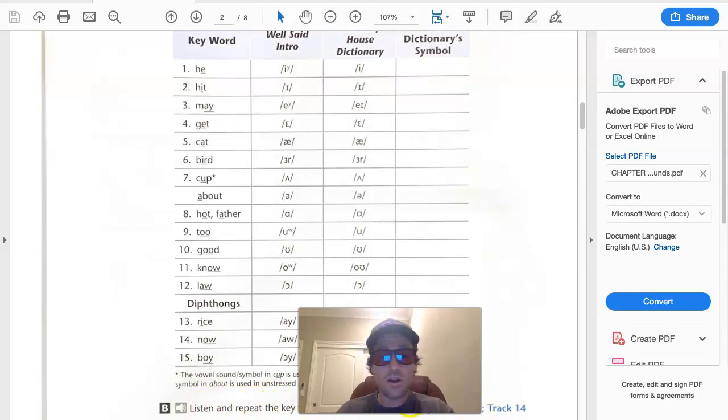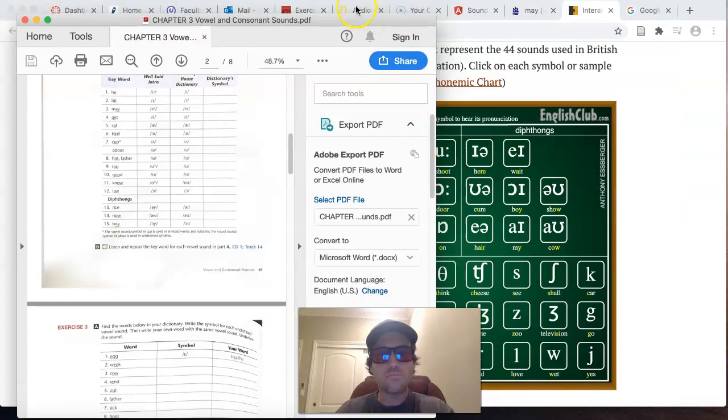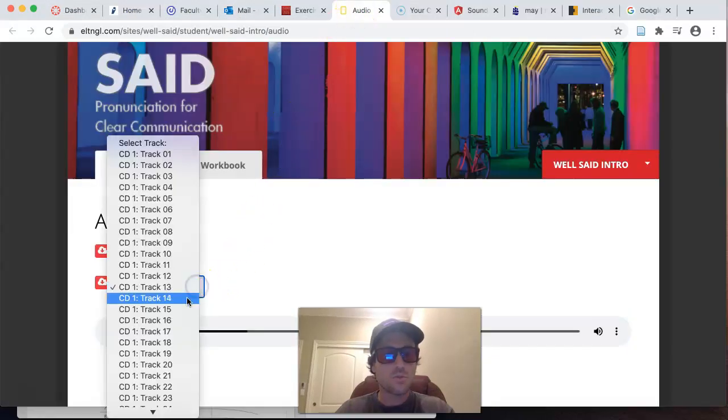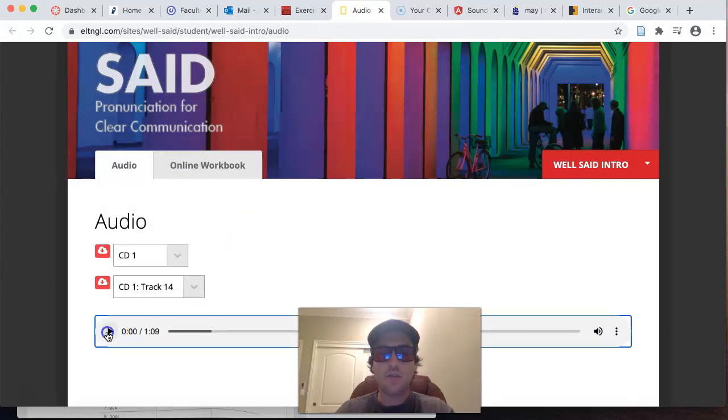And then, of course, you could also play the audio in your online textbook or the online portion of the textbook there. CD 1 track 14. And there you have the pronunciation. Exercise 2B, page 15. There you have it, folks. That is exercise 2, page 15.